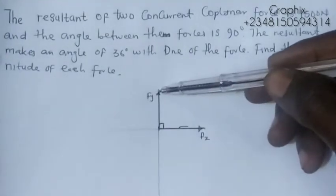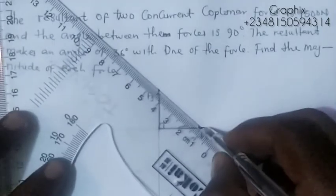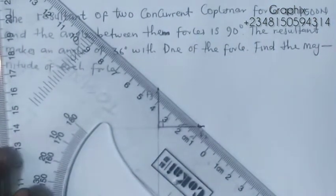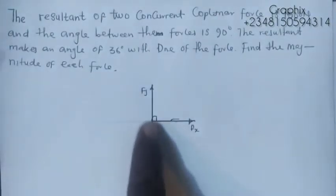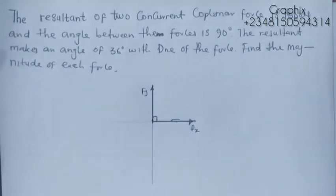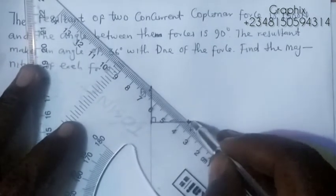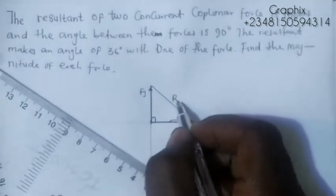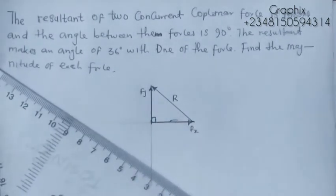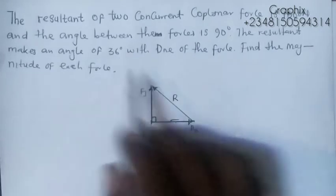The resultant force is the force that can represent both Fx and Fy — it connects both forces together. The resultant force makes an angle of 36 degrees with one of the forces.